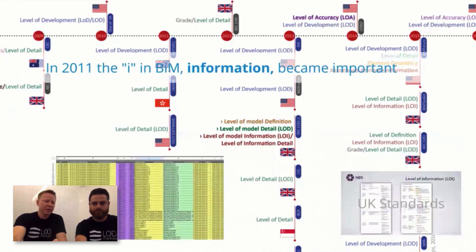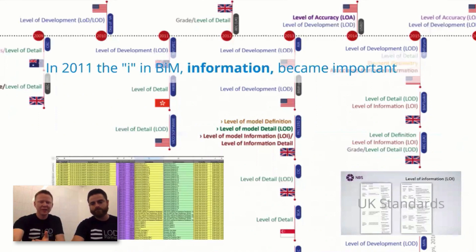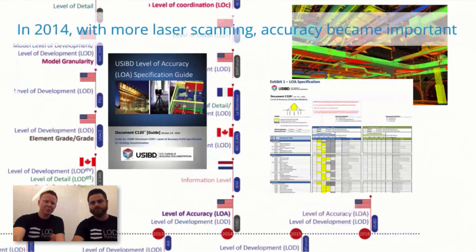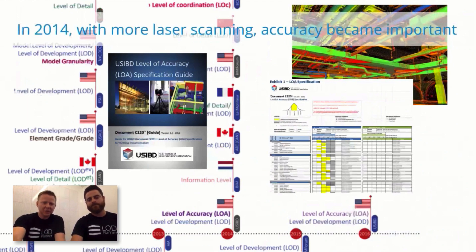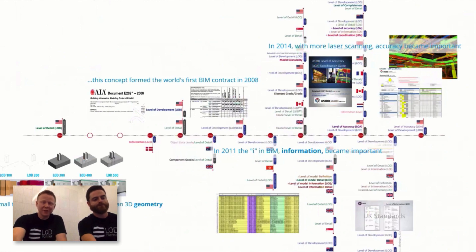COBie data and the COBie transfer protocol really became important. BIM was being used for lots of other things. Then in the UK, the term 'level of definition' emerged — so it went from detail to development to definition. Are you confused yet? Then 'level of information' as a scale came in, with definition as the umbrella term. Detail and information were both used in the UK. And as laser scanning became more prevalent, accuracy suddenly became important — being able to understand the level of accuracy of a measured or represented model is essential. So then the LOA scale started to come about. Lots of different uses, lots of different countries, lots of different definitions — and it didn't become clearer; it became a little bit more cloudy.